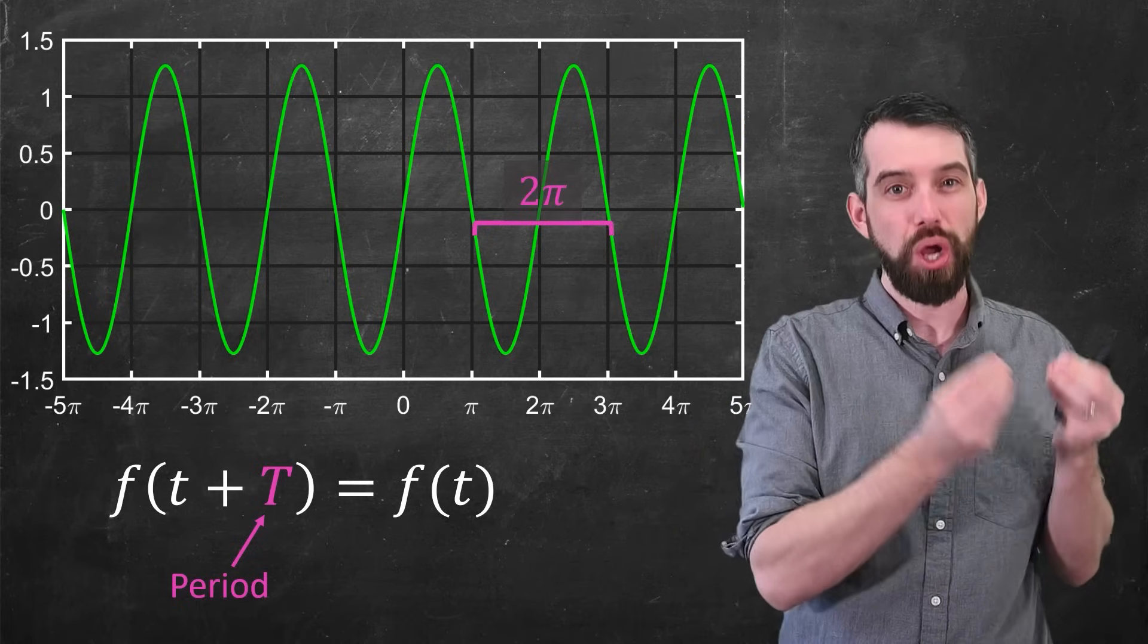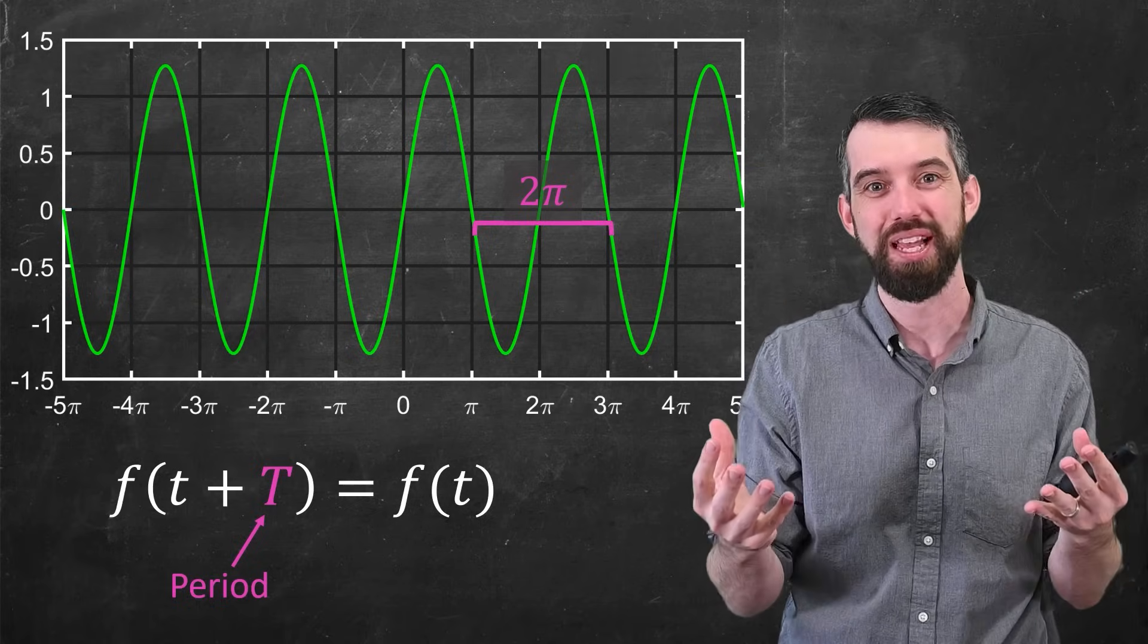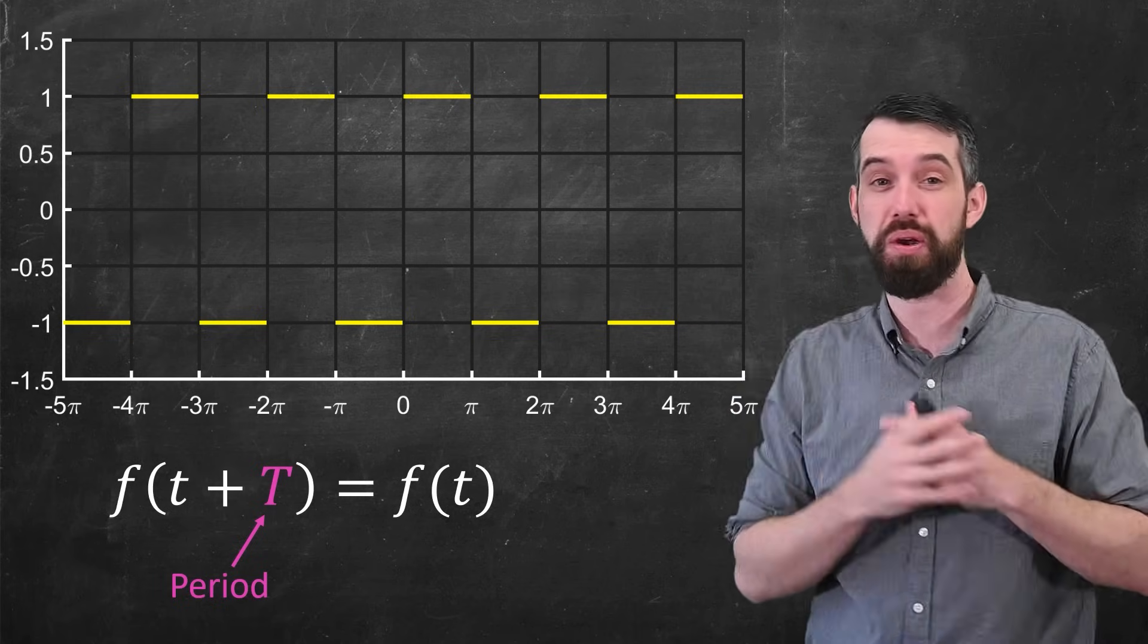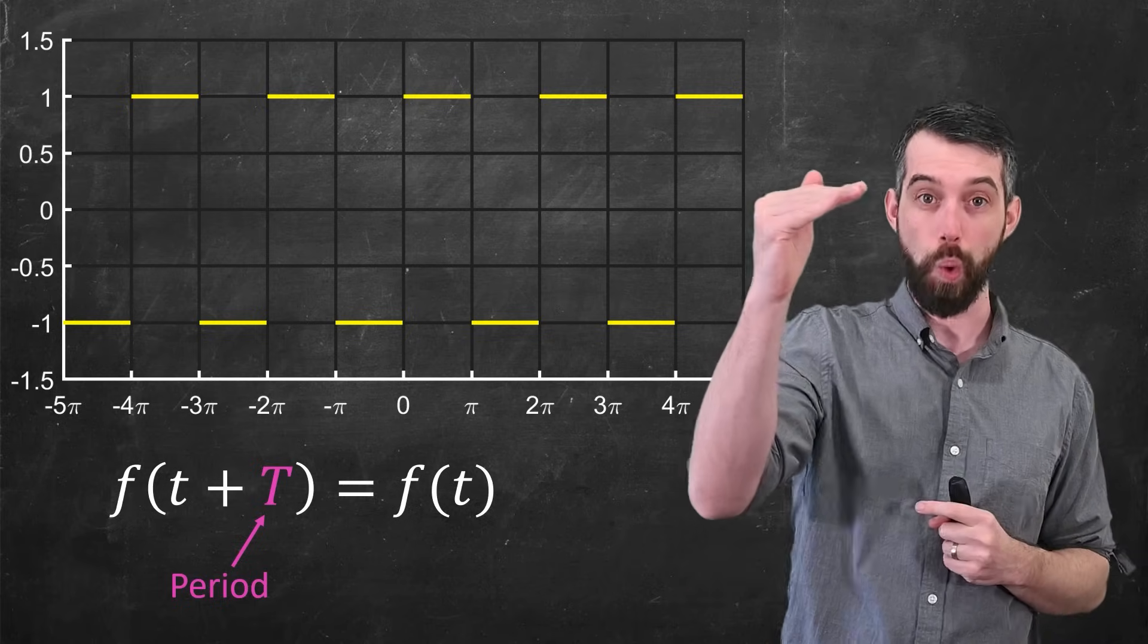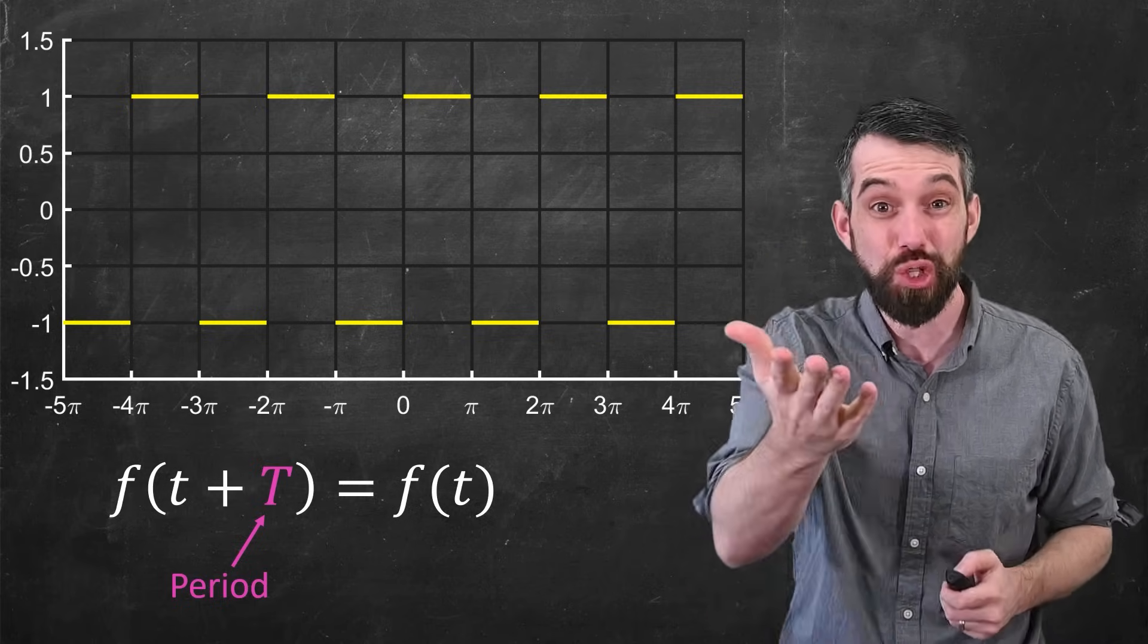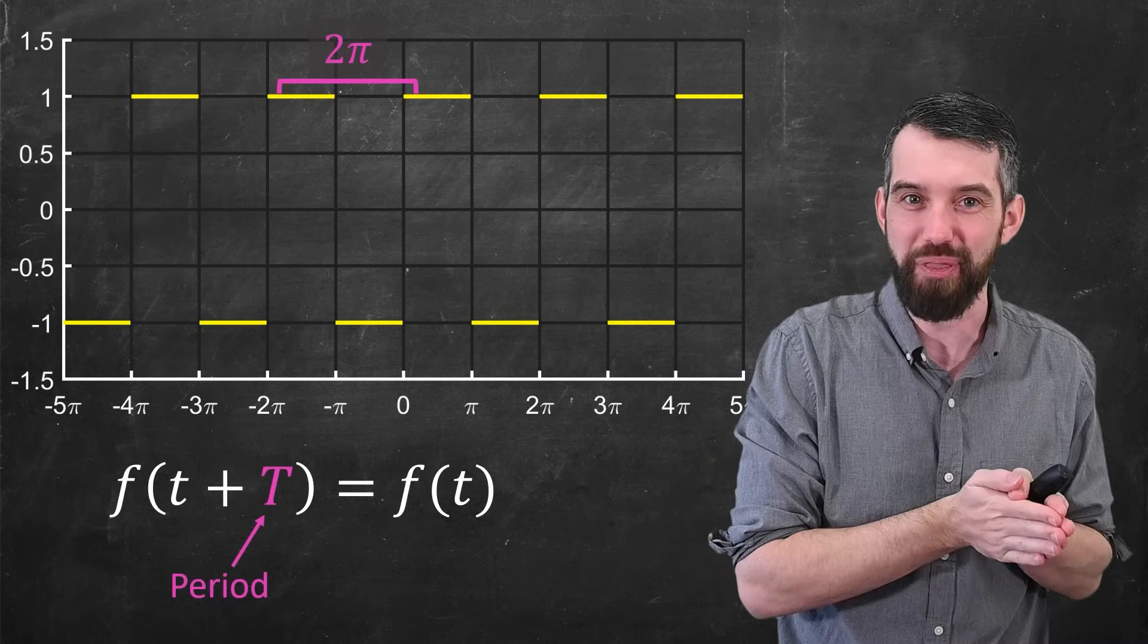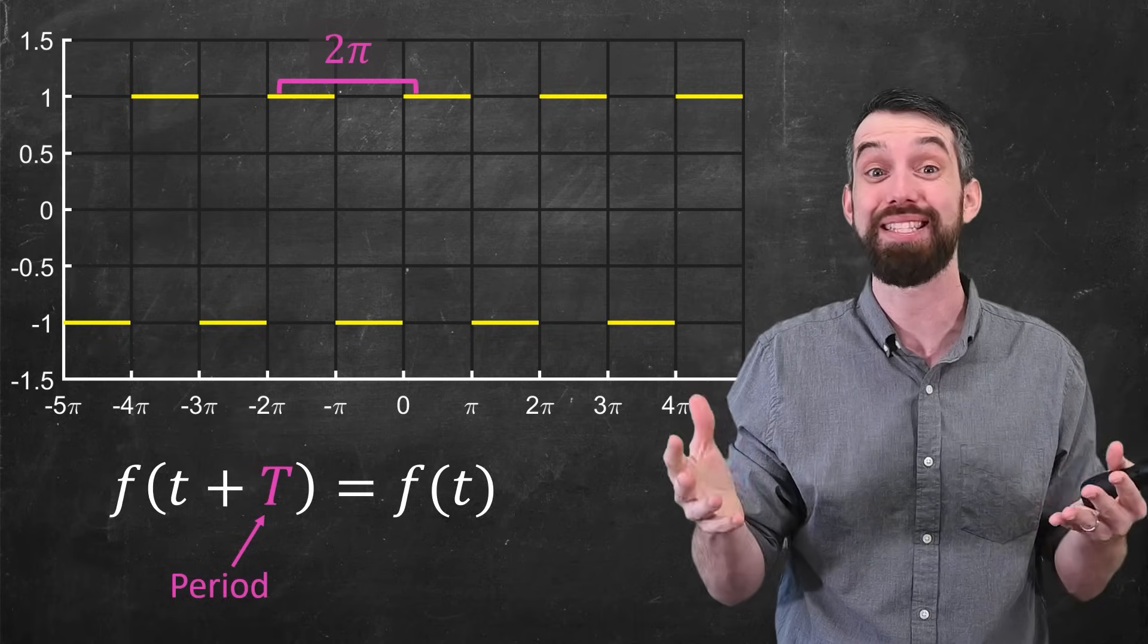Now, while sine and cosine are probably our sort of quintessential examples of periodic functions, there's many others. So for example, consider this periodic function. This is what we call a square wave. It's either 1 or minus 1, and it alternates back and forth as well. And this square wave also has a period of 2π, which means at any spot that you are, you go over 2π and you have the exact same height, the exact same function value.